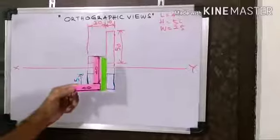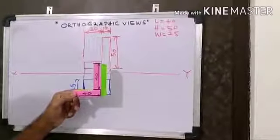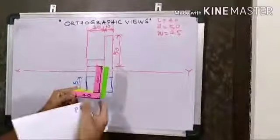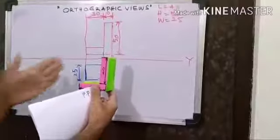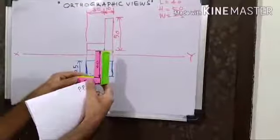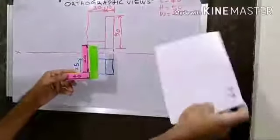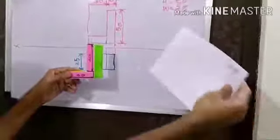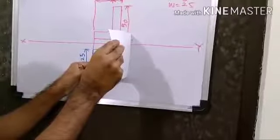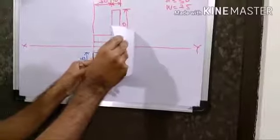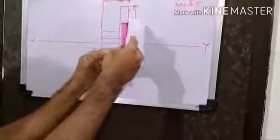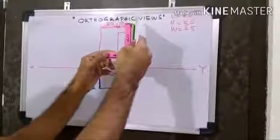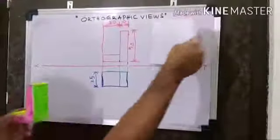Now I am drawing its left side view. You can see this object from this side — you are the observer. This is going to be the left side. Now it is going to be a profile plane, perpendicular to VP and HP. Now I am rotating. This is going to be projected on this, so the profile plane is going to be like this here.